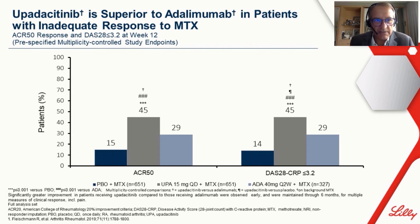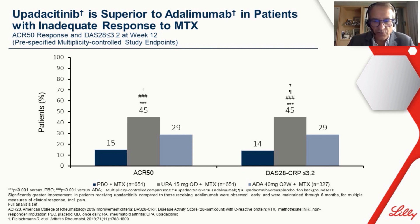A similar but more recently presented trial with upadacitinib also showed superiority to adalimumab on top of methotrexate in patients with inadequate response to methotrexate. The primary endpoint of ACR50 response by week 12 showed superiority of upadacitinib 15 mg per day versus placebo and adalimumab. Similar data was observed for DAS28-CRP ≤3.2, considered low disease activity.